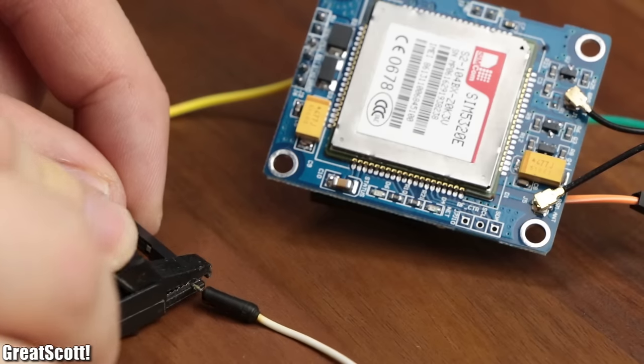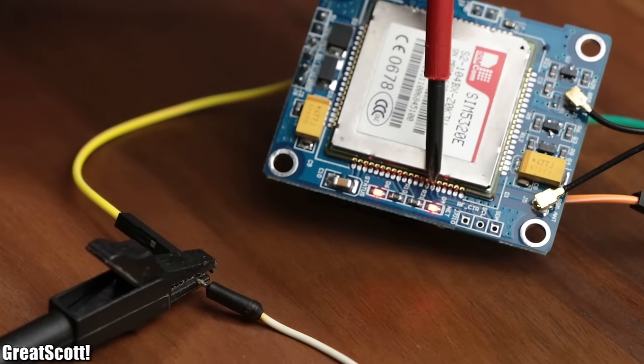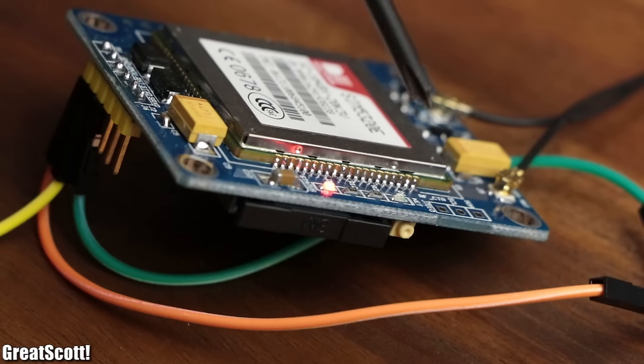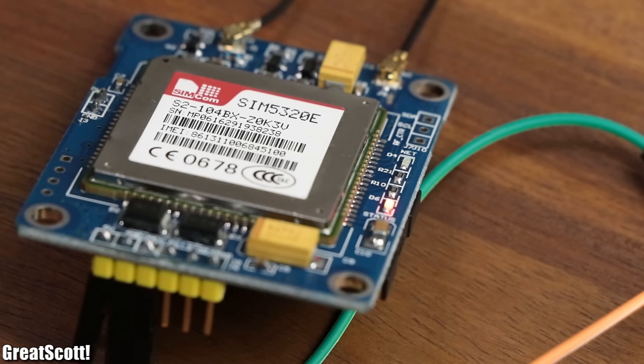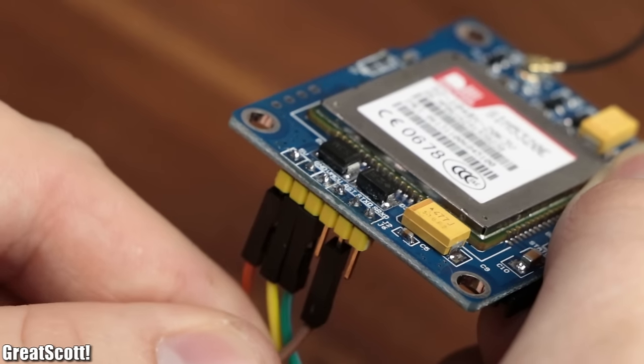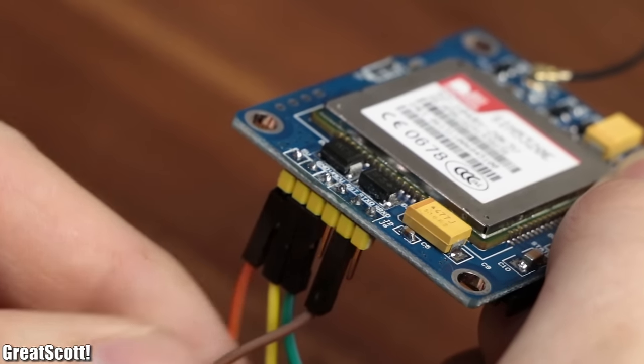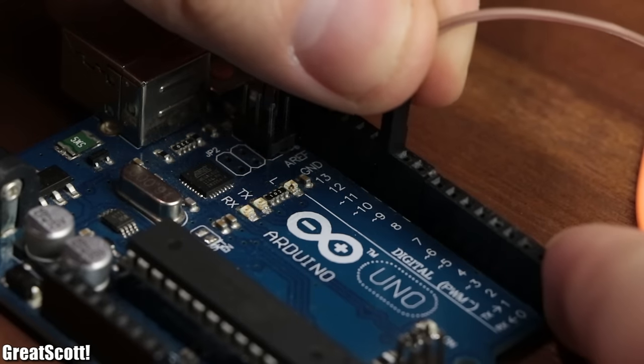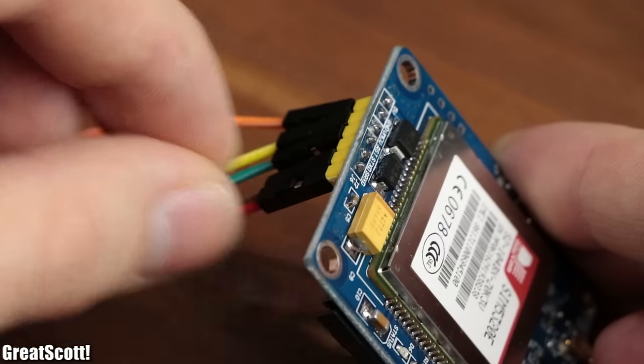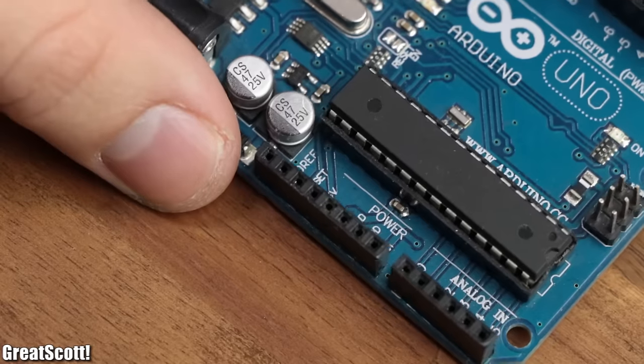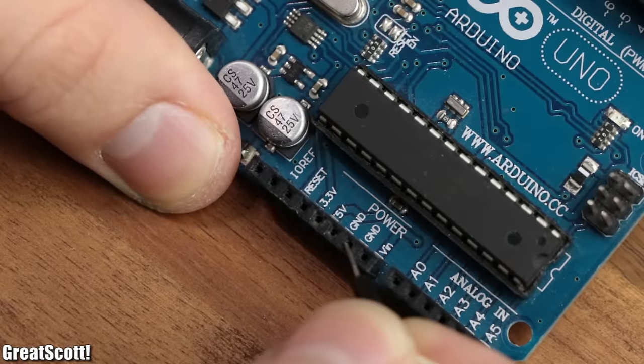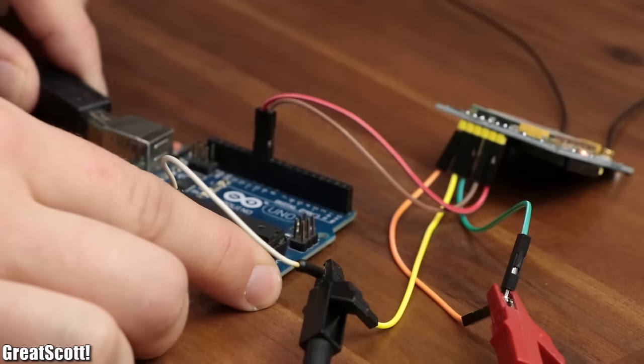During the power-up of the board, both LEDs should light up and once the net LED starts to blink, you know you did everything correctly. To communicate with it, I connected its ST-XD pin to pin 10 of an Arduino Uno, the SR-XD pin to pin 11 and its ground potential to the ground potential of the Arduino.